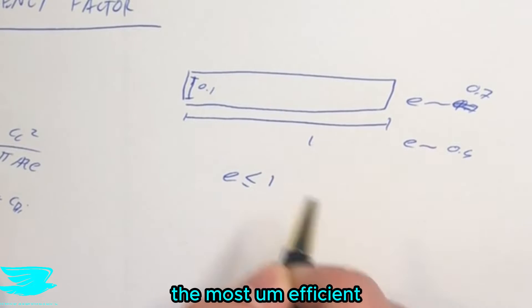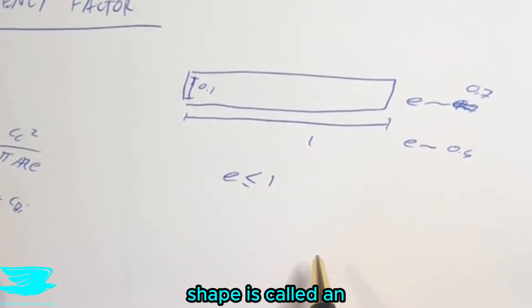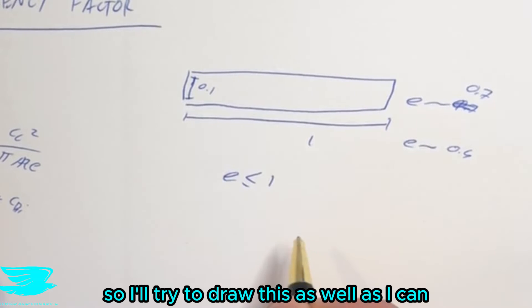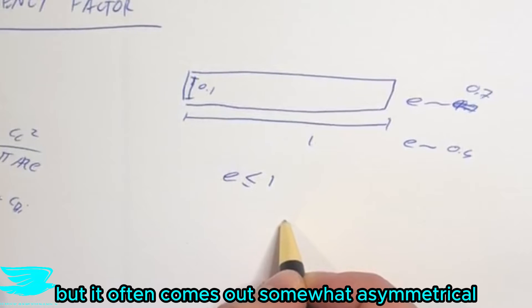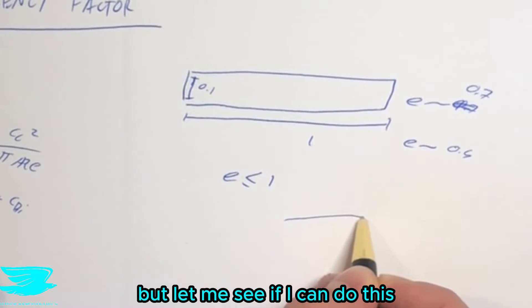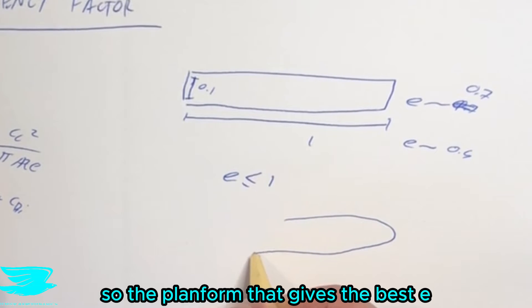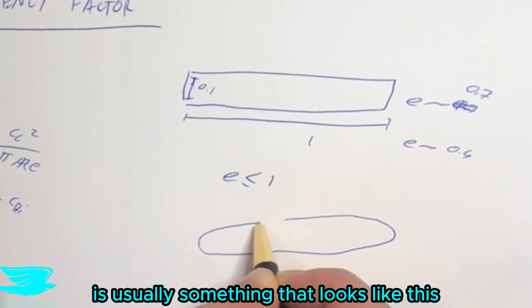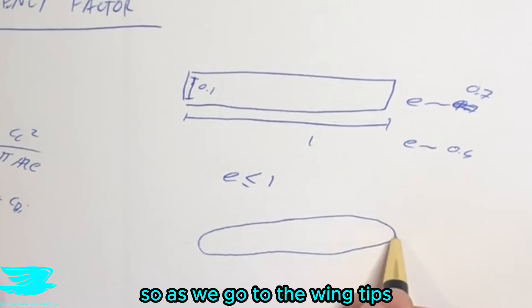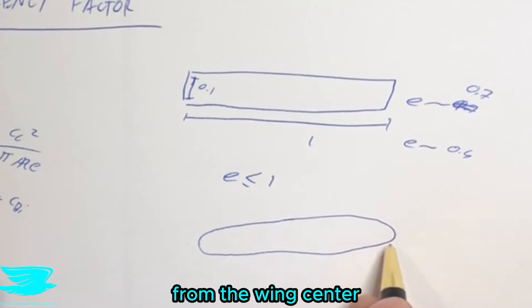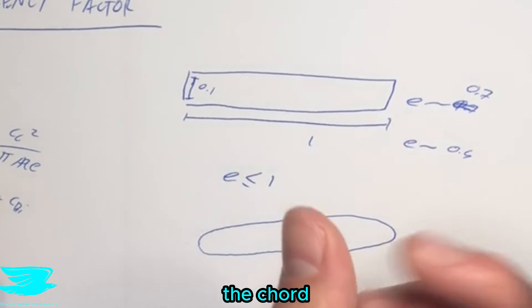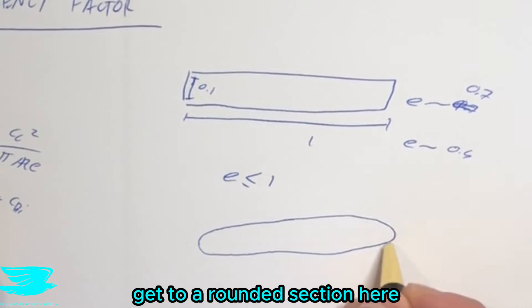And for planar wings, the most efficient shape is called an elliptical wing. So I'll try to draw this as well as I can, but it often comes out somewhat asymmetrical. But let me see if I can do this. So the planform that gives the best E is usually something that looks like this. So as we go to the wing tips from the wing center, the tips start to get small. The chord gets smaller and smaller until it gets a rounded section here.